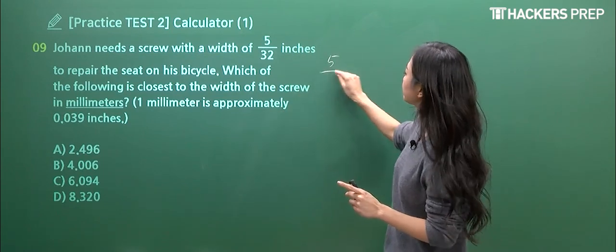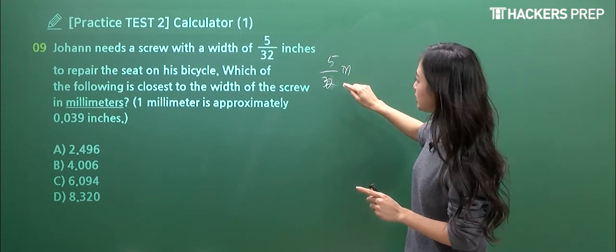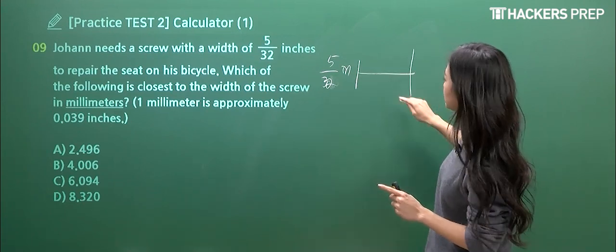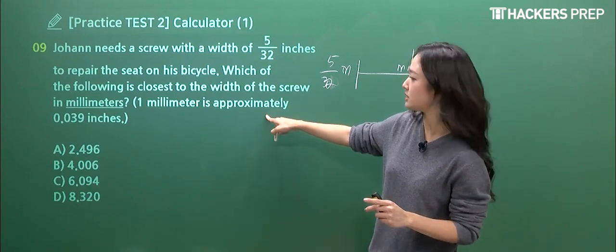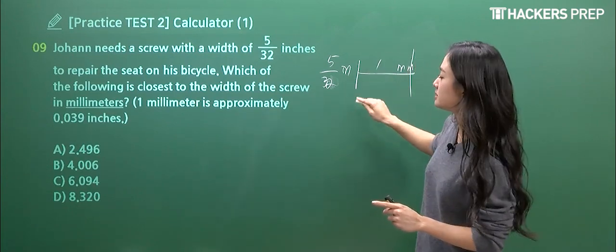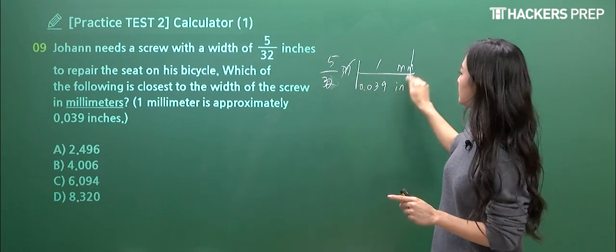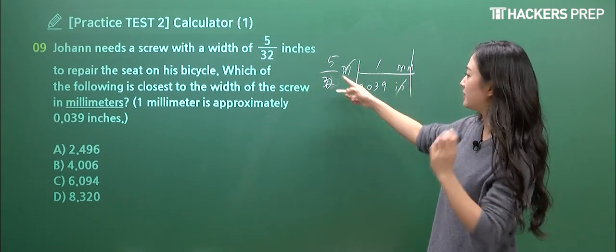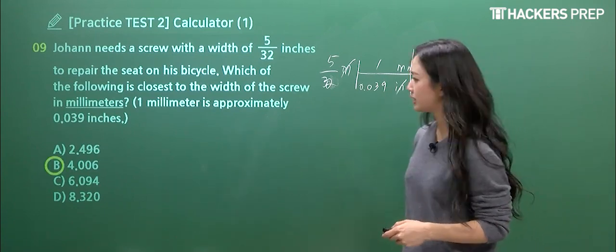So let's just write it out. 5 over 32 is in terms of inches and we're going to convert this in terms of millimeters using the information they present. One millimeter is equivalent to 0.039 inches and at the end they just cross out. So you apply this, plug this into your calculator and I think we do get a match. Correct answer is B.